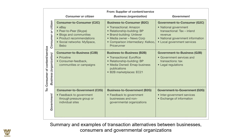Let us summarize the transactional alternatives between businesses, consumers, and government using a nine-cell framework with supplier content on the x-axis and consumer content and services on the y-axis. Consumer-to-consumer (C2C) examples include eBay or peer-to-peer platforms like Skype. Business-to-consumer (B2C) is transactional, like Amazon, relationship-building like BP, or brand-building like Unilever. Government-to-consumer (G2C) includes tax collection, national government information, and local government services.